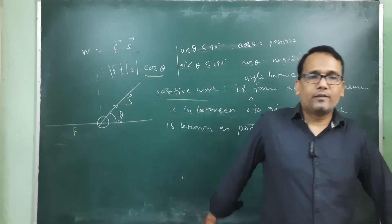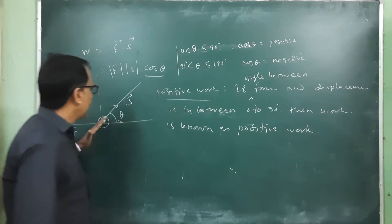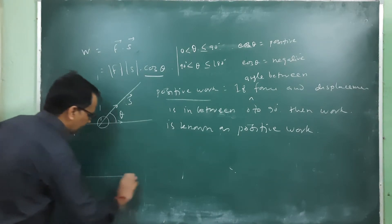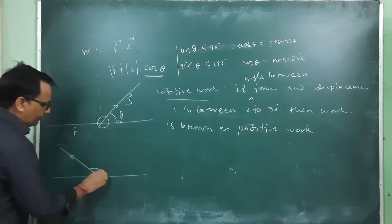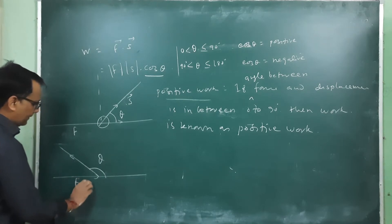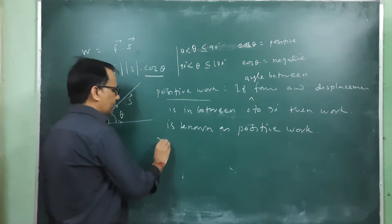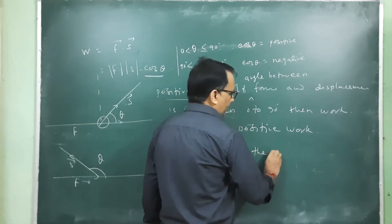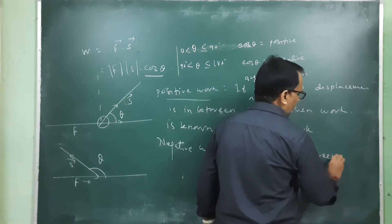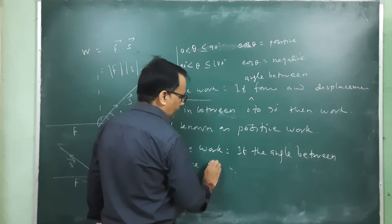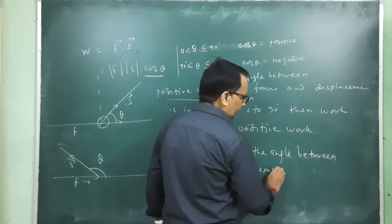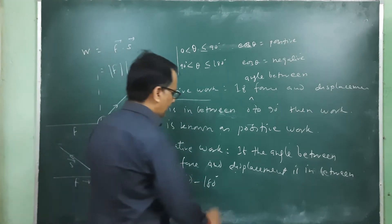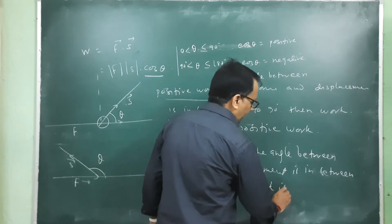Positive work occurs when force and displacement are in the same direction or at an angle less than 90°. Negative work occurs when the angle between force and displacement is between 90° and 180°. For example, if force is applied in one direction and displacement is along the same direction (0°), that is positive work; if the displacement is in the opposite direction (180°), that is negative work.